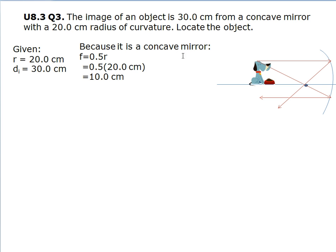Now, because it is a concave mirror, the focal point is half of the radius. So half of 20.0 centimeters is 10.0 centimeters.